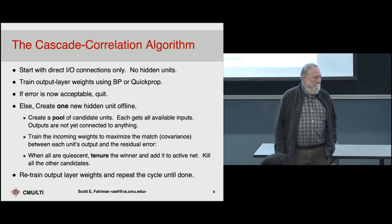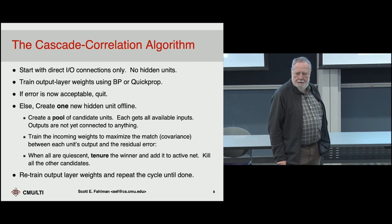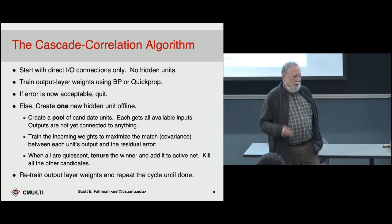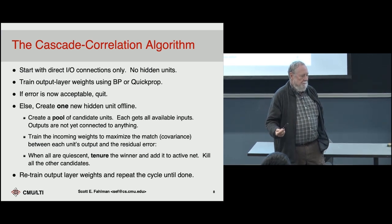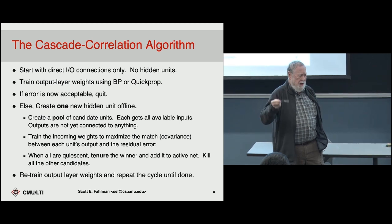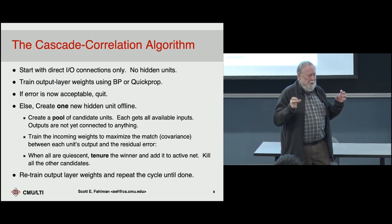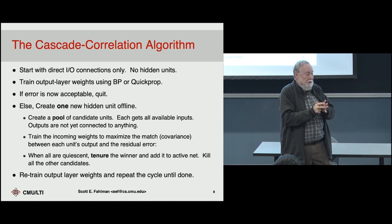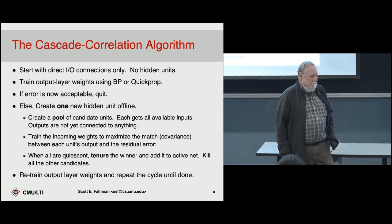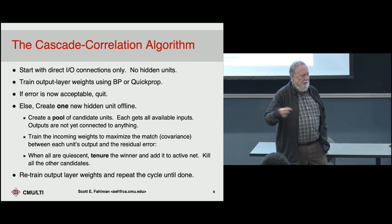A question arises: isn't it worth trying to salvage some of the candidate units you're about to throw away? The answer is yes. If you've got three or four units that are not correlating with each other but are all correlating with the error, it's worth putting all of them in. If they're redundant and have all learned the same thing, you only need one. So if you've got unique units correlating with the error — unique meaning they don't correlate much with one another — it's worth putting in more than one.